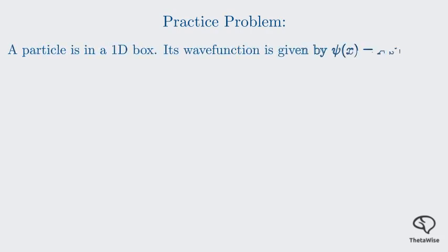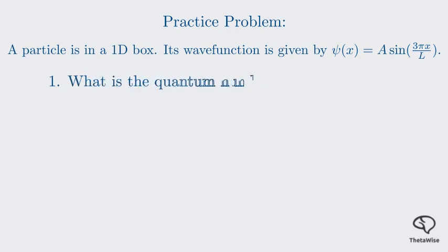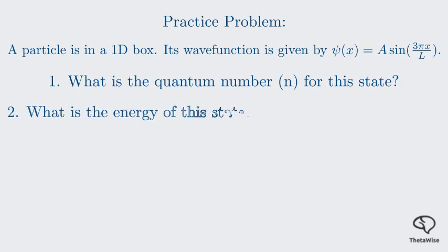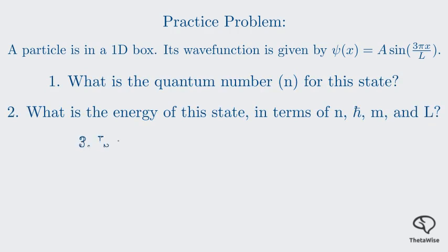Let's put your understanding to the test with a practice problem. Feel free to pause the video and try to work through this yourself. Suppose an electron is in a one-dimensional box. Its wave function is described by ψ of x equals A times sine of 3πx over L. First, what is the quantum number n for this state? Second, what is the energy of this state in terms of n, ℏ, m, and L? And third, is this the lowest possible energy state for the electron? Take a moment to think about it.